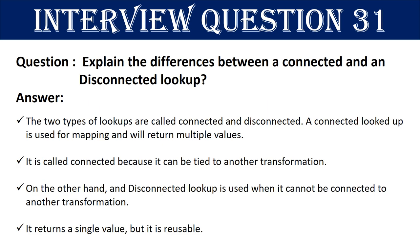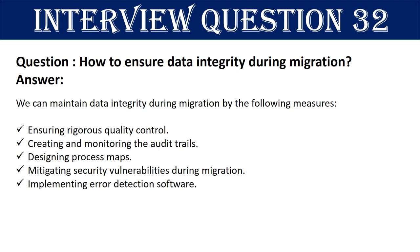Question 31: Can you explain the differences between a connected and a disconnected lookup and when to use each? A connected lookup is used for mapping and will return multiple values — it is called connected because it can be tied to another transformation. A disconnected lookup is used when it cannot be connected to another transformation; it returns a single value but is reusable.